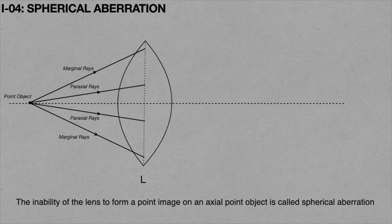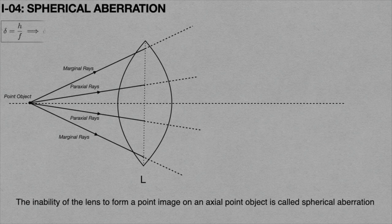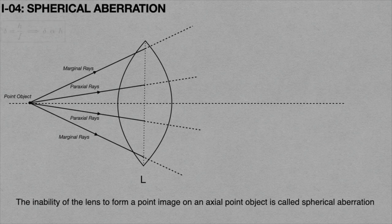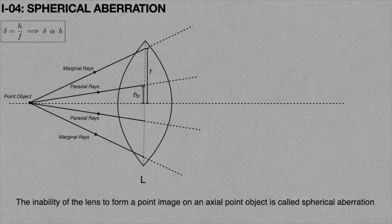If the lens were not there, these paraxial and marginal rays would go straight without any deviation. But due to the presence of the lens, these rays get deviated. We know the formula delta = h/f, which implies delta is proportional to h, since the focal length f of a convex lens is constant. Hence, delta is directly proportional to h. When you observe the figure, the paraxial rays are incident on the lens at height Hp, and the marginal rays at height Hm from the principal axis. Hence, Hm is greater than Hp.